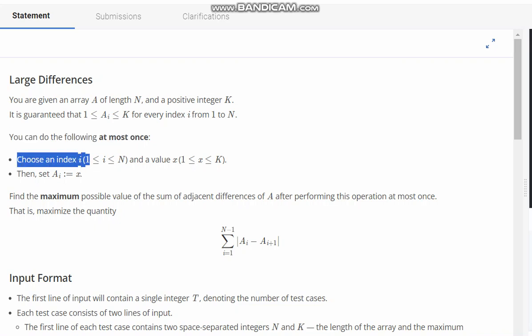Choose an index i ranging from 1 to N and value x ranging from 1 to K. Then set A[i] equal to x.